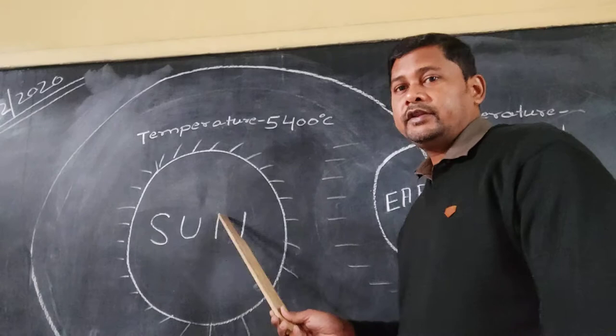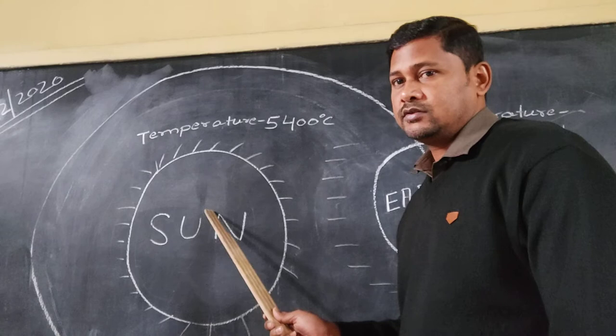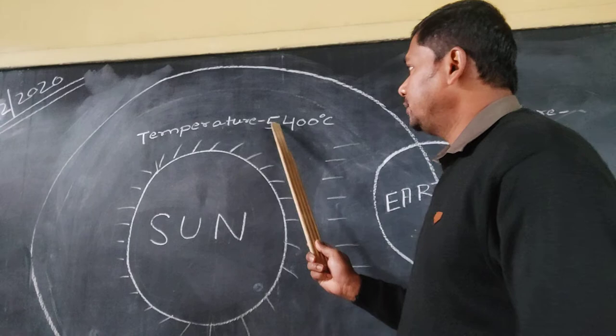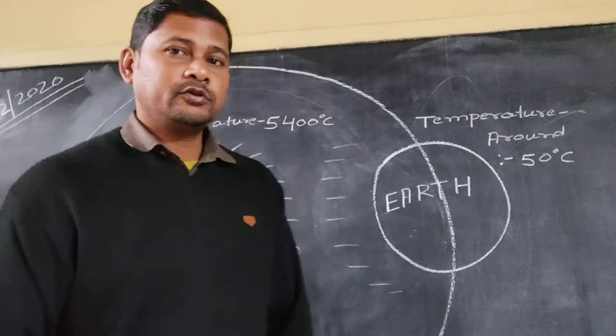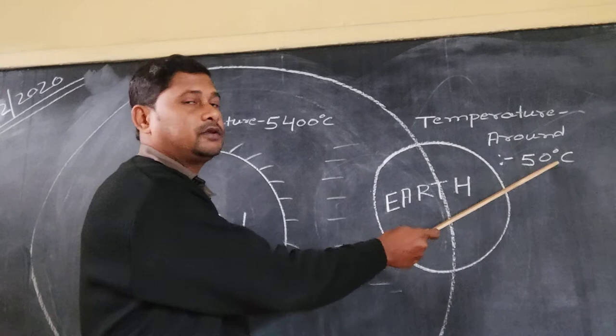Now here is the sun. We know the sun is a huge ball of hot gases, and the temperature of the sun is around 5400 degree Celsius. And one more thing I want to show you here.